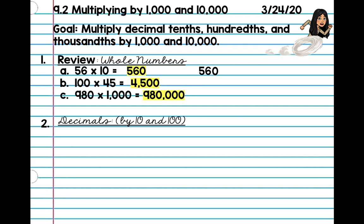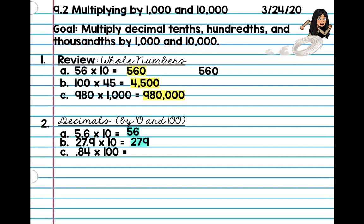So let's try letter A together. Go ahead and skip a line and write number 2. Here is letter A: 5.6 times 10. You move your decimal place over once, and you got 56. Let's try letter B: 27.9 times 10. You move the decimal place over, so our answer is 279. This one's bigger — 100. So 0.84 times 100. You take your decimal and you're going to move it over twice. 1, 2, so our product is 84.